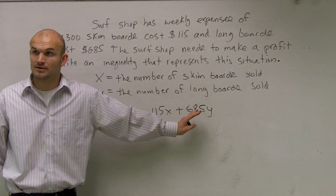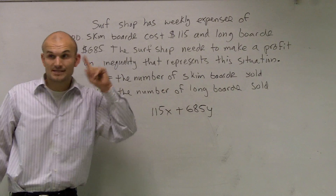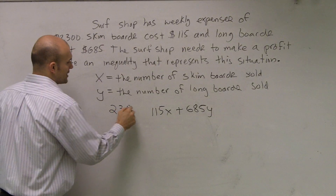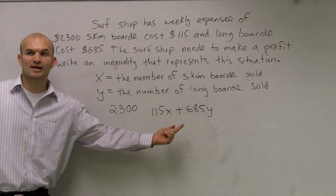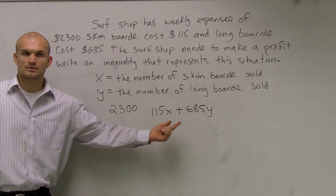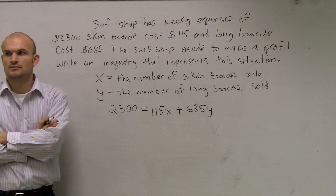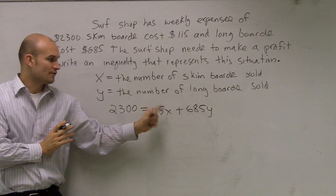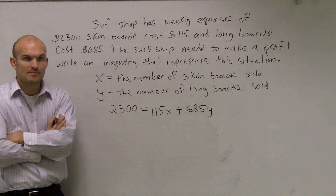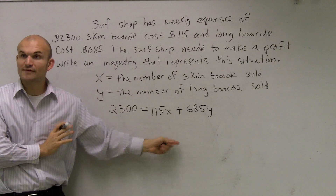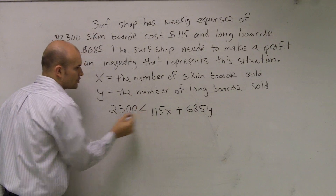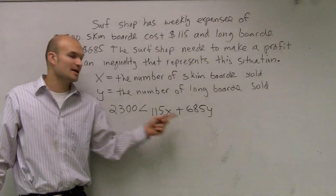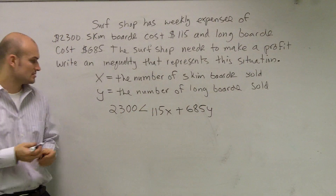This amount needs to be a profit, and their costs are $22,300. If their costs equal how much they bring in, do they make a profit? No — they broke even, because how much it costs equals how much they brought in. So for them to make a profit, the revenue side has to be bigger. We're going to say it has to be greater than — not greater than or equal to, because if it was equal, they broke even. Their revenue, how much they bring in, has to be greater than the cost.